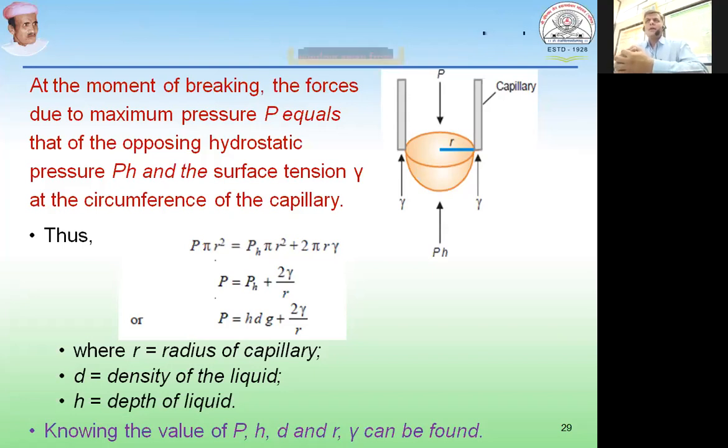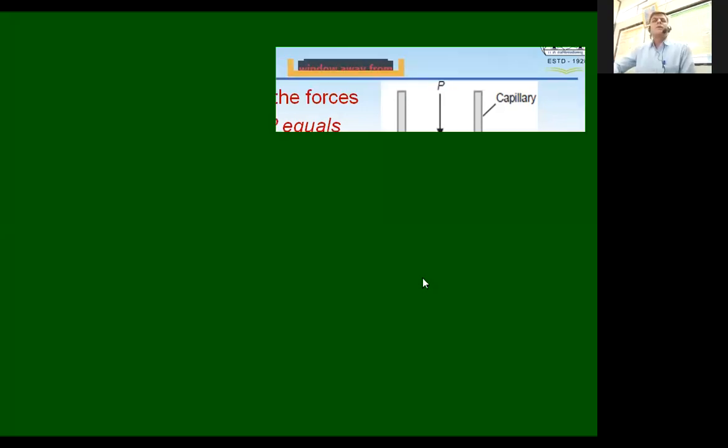Now, if we want to put these things into equation, the pressure which we were applying from the open end of the capillary and the hydrostatic pressure and surface tension which that liquid was putting onto the bubble which was being formed at the end of the capillary because of the air pressure being applied, these two becomes equal.